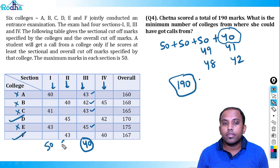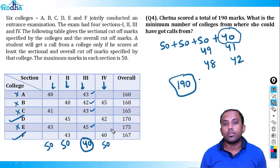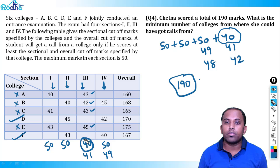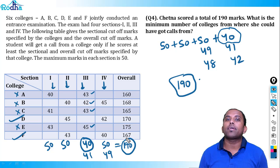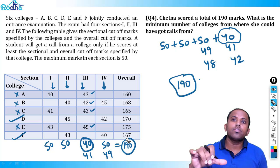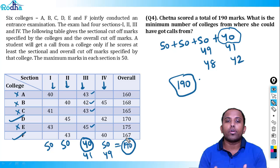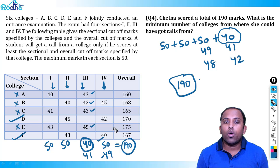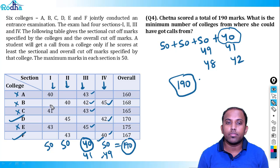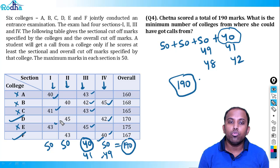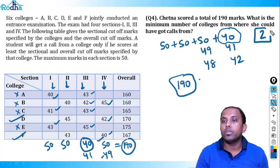With 40 in section 3 and 50 each in sections 1, 2, and 4, she still gets calls from only 2 colleges: D and F. Even adjusting to 41 in section 3 (and 49 elsewhere) makes no difference — she's still eliminated from those four colleges. The way to think here is: minimize any one section and place that in the section with the most data values. The answer is 2 — she gets calls from at least 2 colleges after scoring 190 marks.